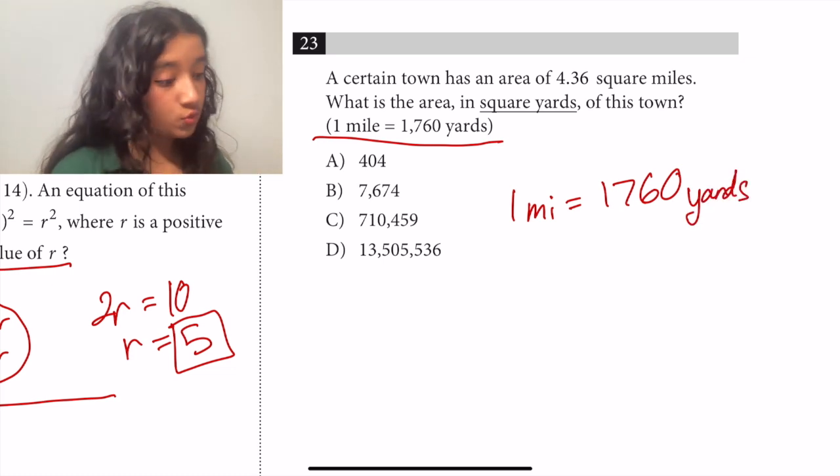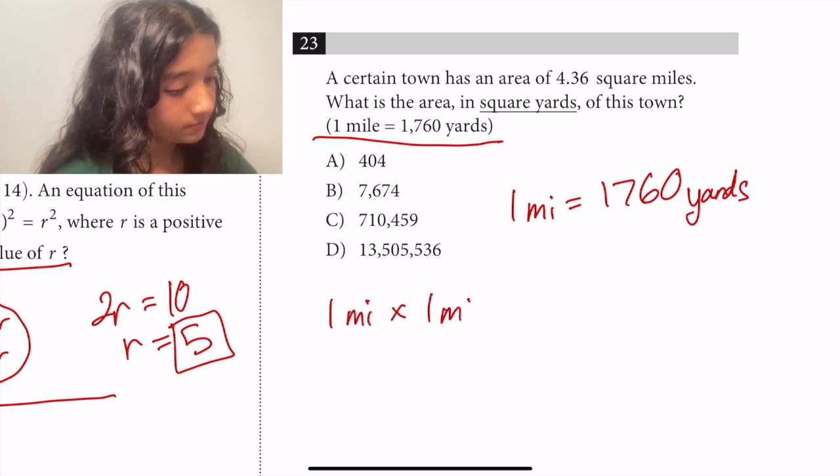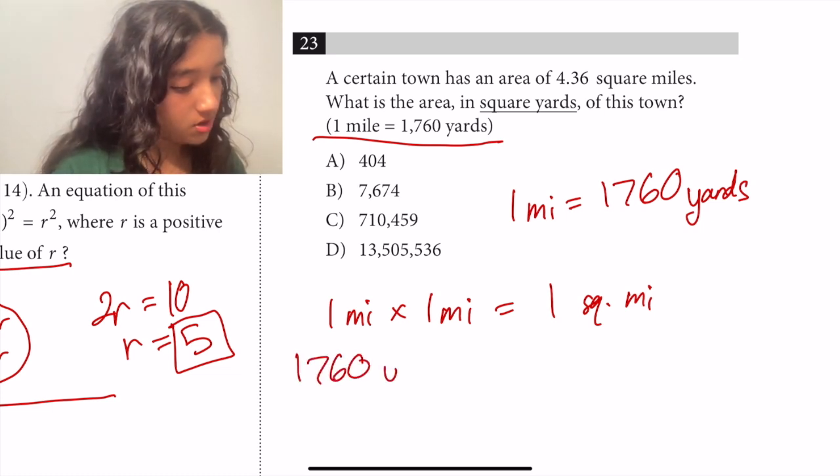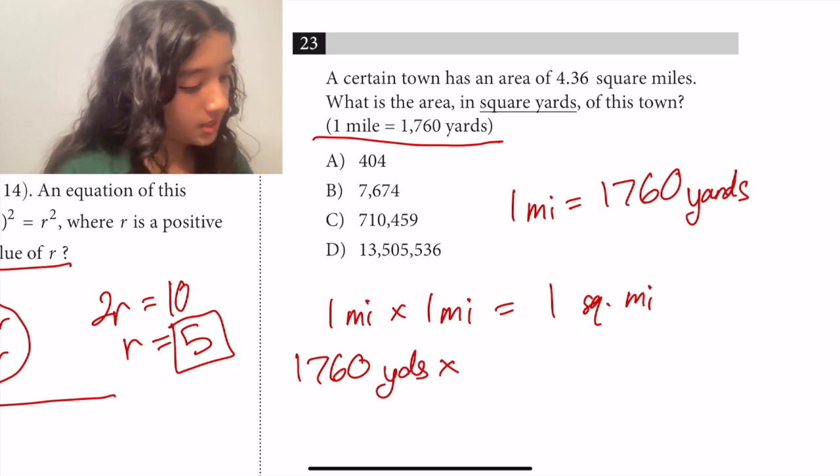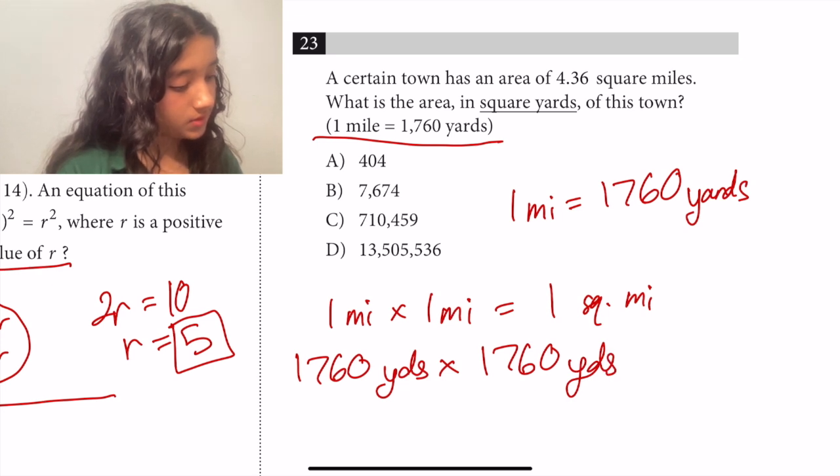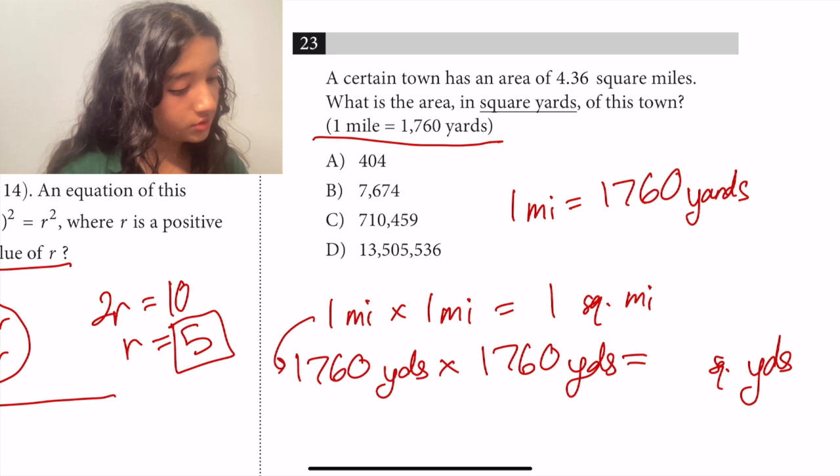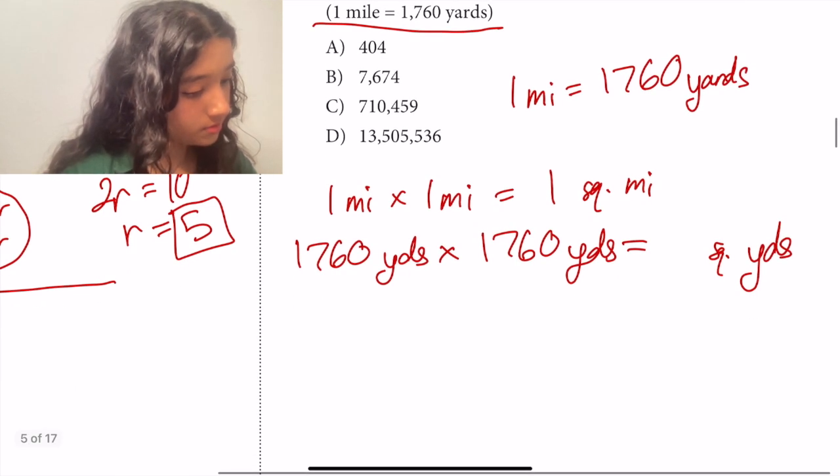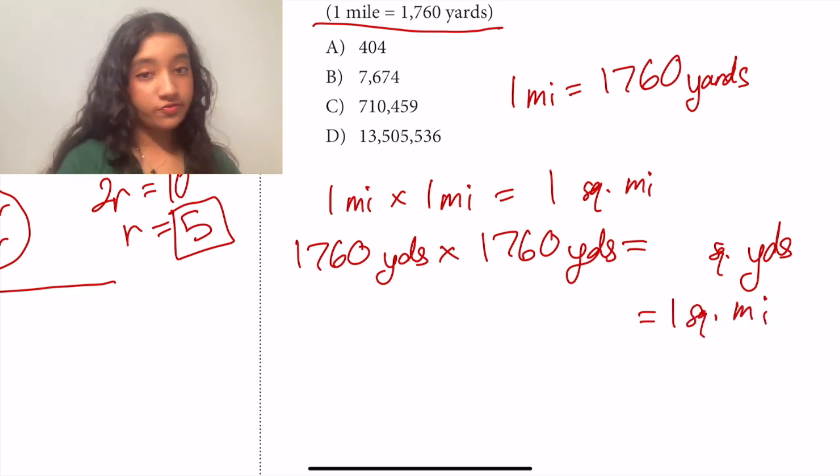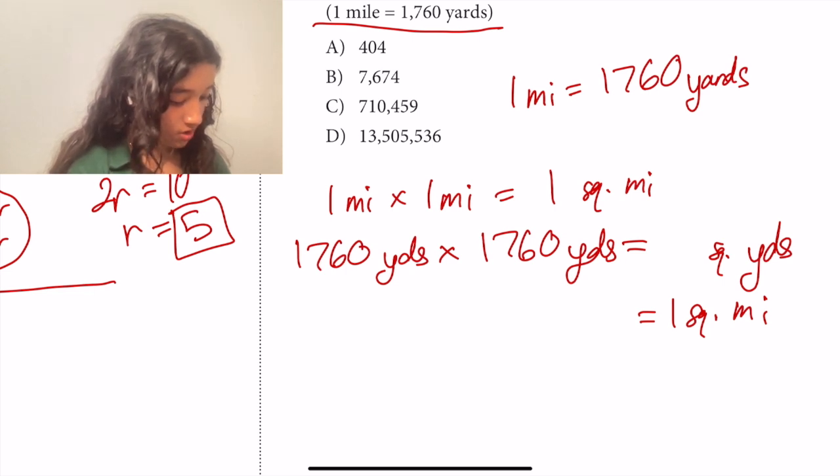So if we want to find one square mile, that's one mile times one mile is equal to one square mile. Well, if we convert one mile to 1,760 yards, and then the other mile is 1,760 yards, that'll get us yards squared, square yards. And this is also equal to one square mile. So in this case, if we multiply 1,760 times 1,760, which you can do on your calculator, you get that one square mile is equal to